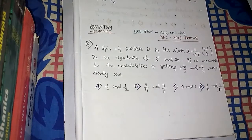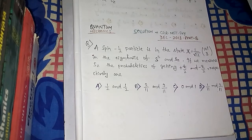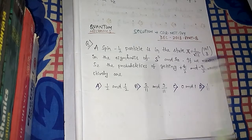Hello friends, this is Vidhan, welcome to my channel. Today we will see a problem from quantum mechanics from December 2013 Part B. It says a spin-half particle is in the state chi equal to 1 by root 11, column matrix (1+i, 3), in the eigenbasis of S-squared and Sz. If we measure Sz, the probabilities of getting plus h-bar/2 and minus h-bar/2 respectively are?